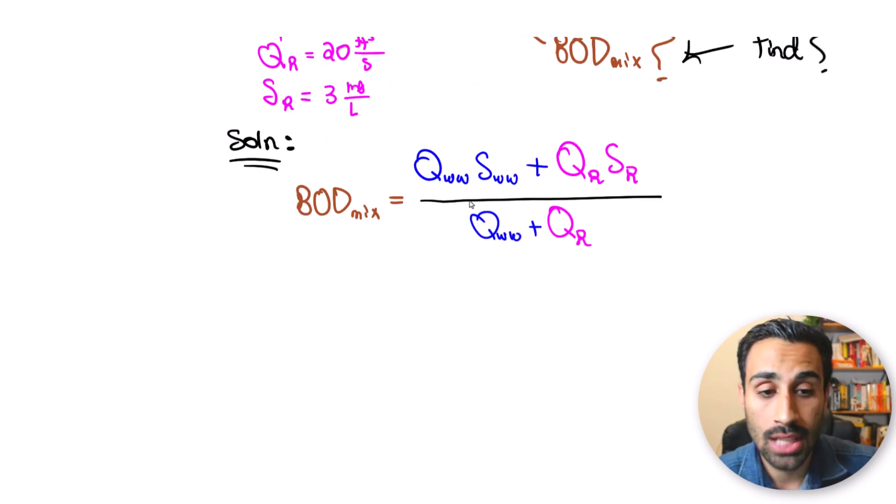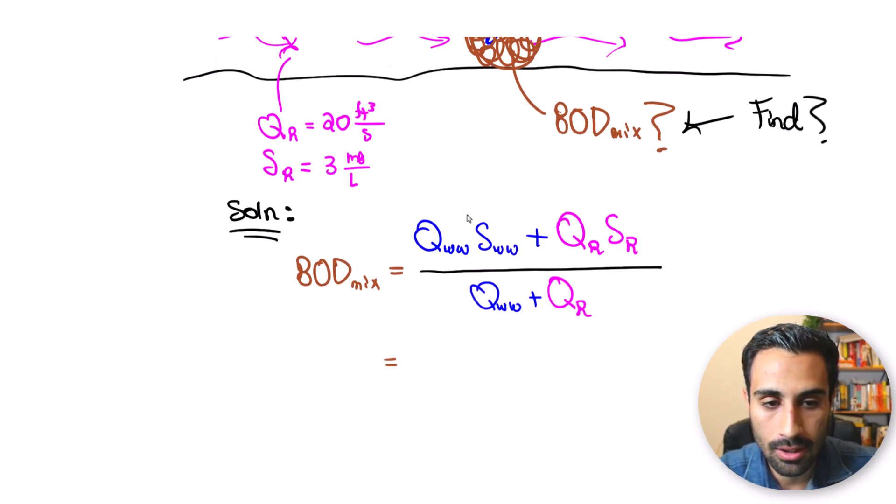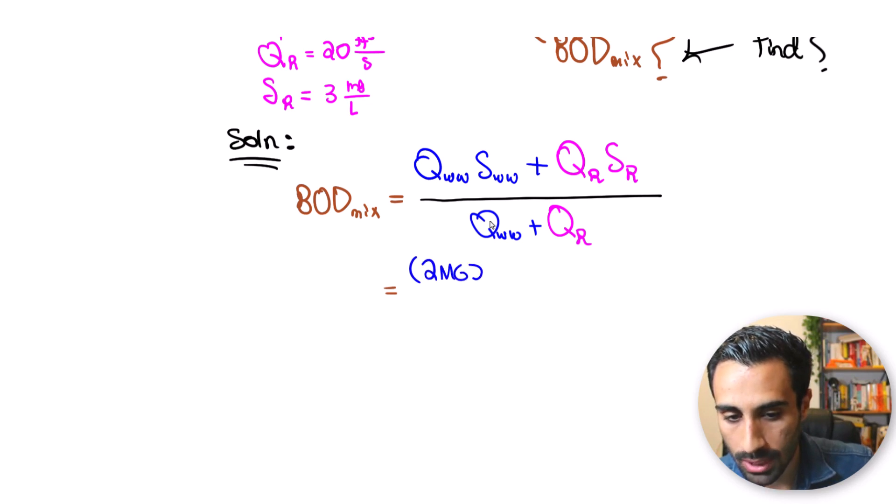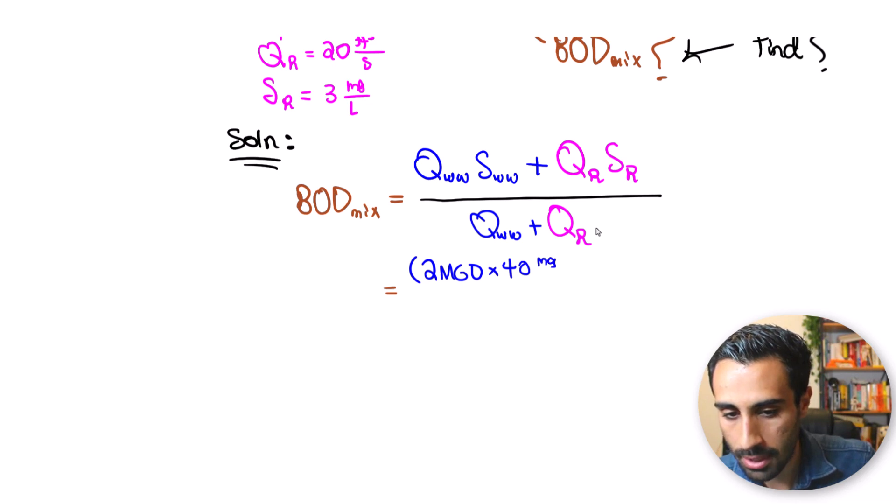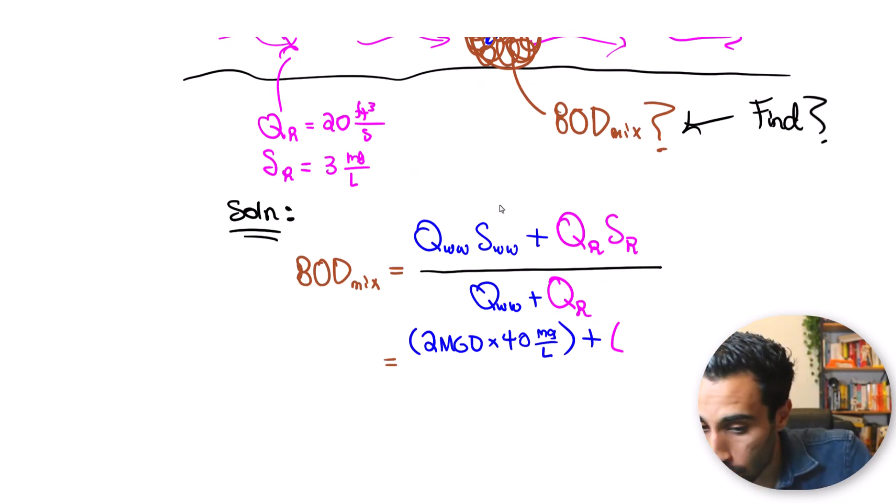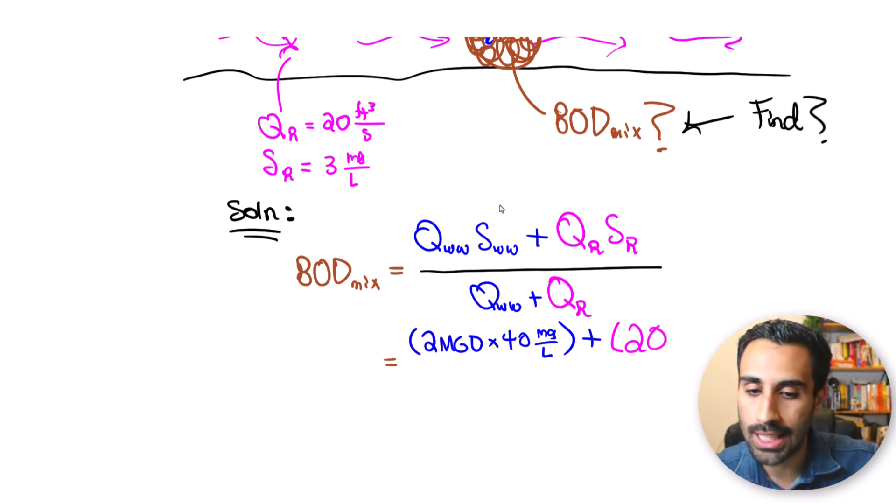What we'll do next is start plugging numbers in. So Q wastewater we know that's 2 MGD. So we will put that in here as 2 MGD, million gallon per day, times the S for wastewater, that's 40 milligram per liter. Then we take this plus the Q for the river. So the Q for the river is going to be 20, but units don't match. That would be a mistake. Notice the 20 is in cubic feet per second. This is in MGD. Units have to cancel. All the concentrations or BOD have to be milligram per liter and the flow has to be the same units.